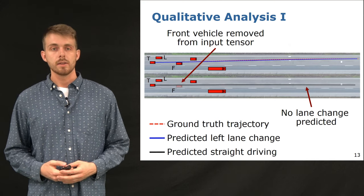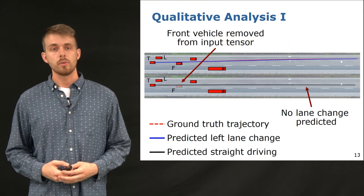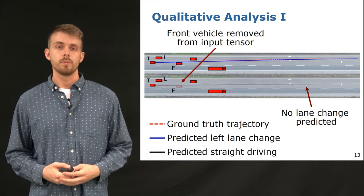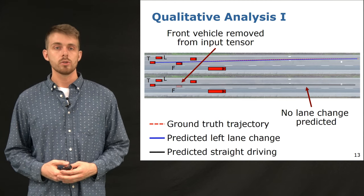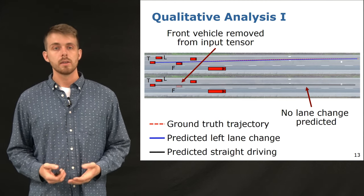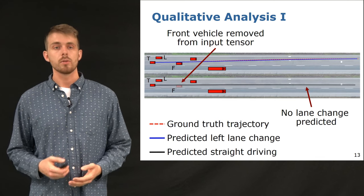We create a synthetic scene by deleting the car in front from the input representation. This changes the prediction of our approach to a straight driving maneuver, since a lane change is no longer needed without the slower car in front.